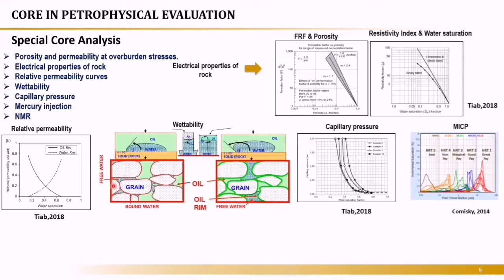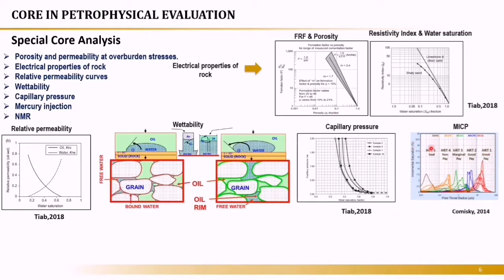Wettability is very important — special core analysis can tell you whether your reservoir is oil-wet or water-wet, which is important for enhanced oil recovery. Capillary pressure is the essential input for saturation height modeling. Using the J-function or Brooks-Corey models with capillary pressure and water saturation as inputs, you can obtain initial water saturation without using resistivity data. Mercury injection capillary pressure (MICP) gives pore throat radius distribution, allowing you to discriminate reservoir quality — whether you have nano-, micro-, or megapores.